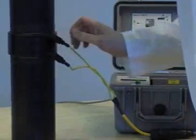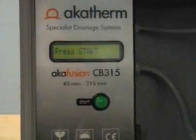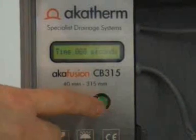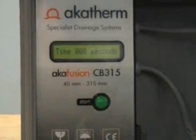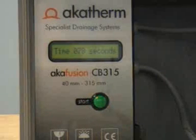Connect the output leads to the fitting. Now start the Electrofusion unit by pressing the green button. The device will display the welding time. Welding time depends on the pipe size used.